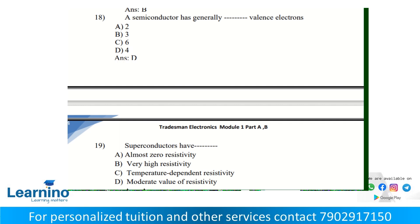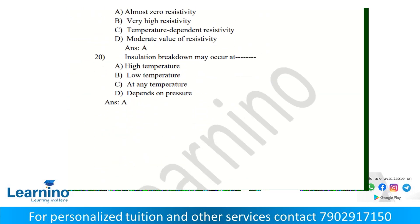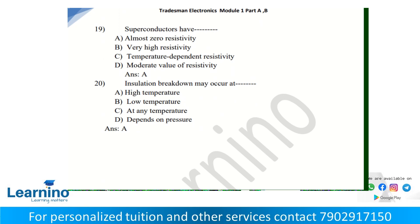Superconductors, at a particular temperature, have resistance close to zero. The answer is almost zero resistivity. Insulation breakdown may occur at high temperatures.